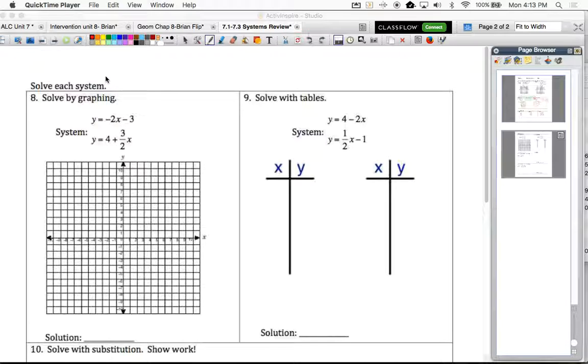On the front side, we talked about using our y-intercept and our slope. We're going to do the same thing here. The y-intercept for the first equation is negative 3, so we're going to graph that point first. And then our slope is negative 2.